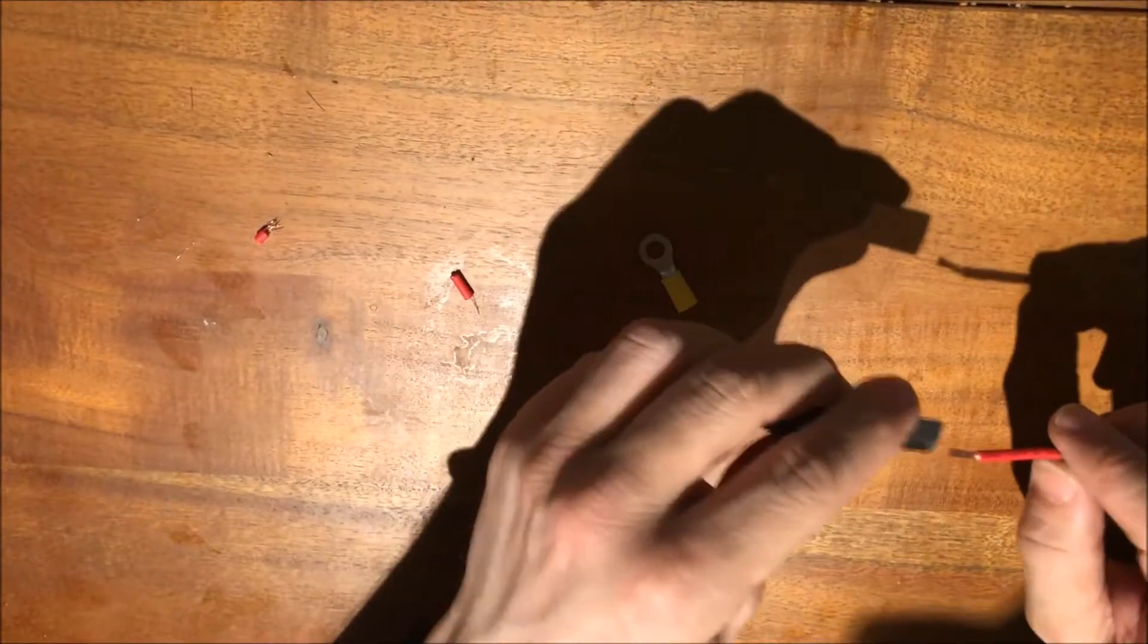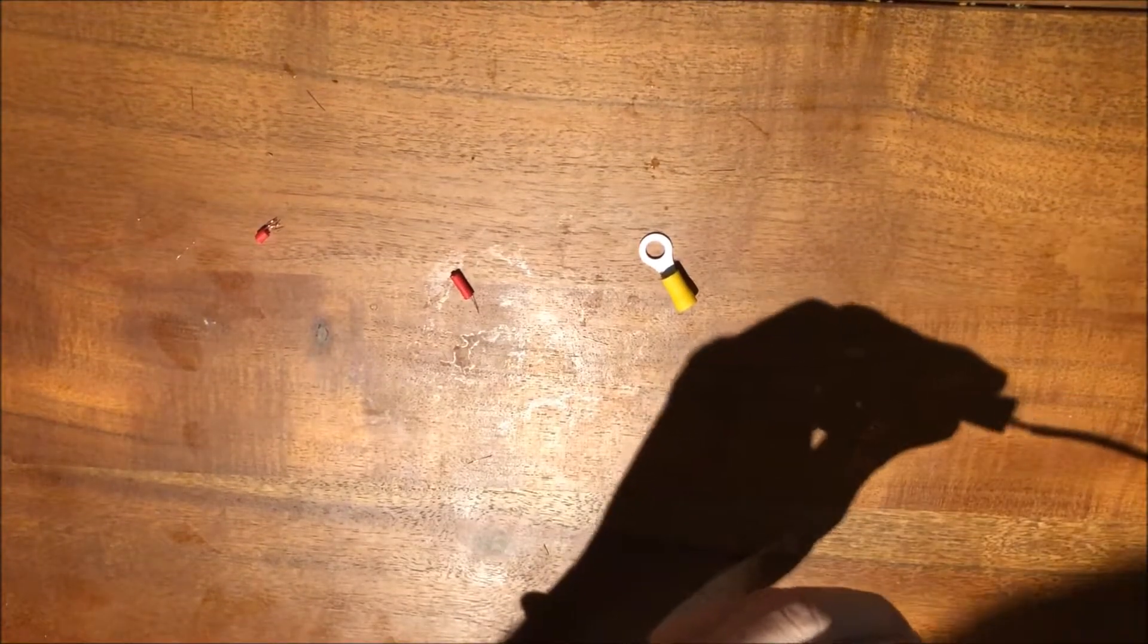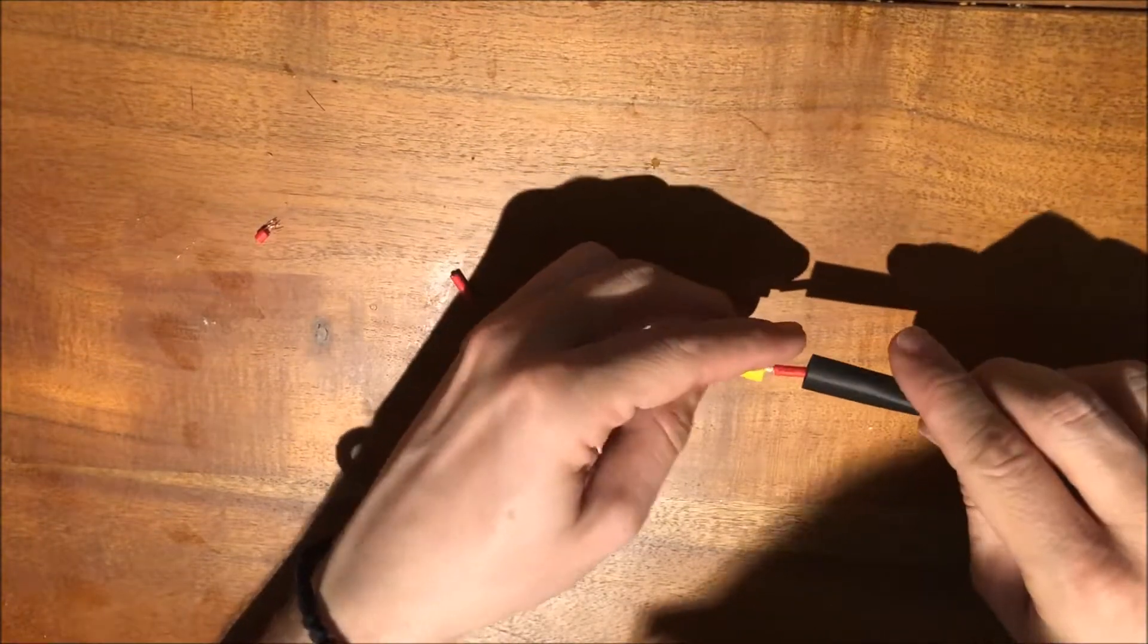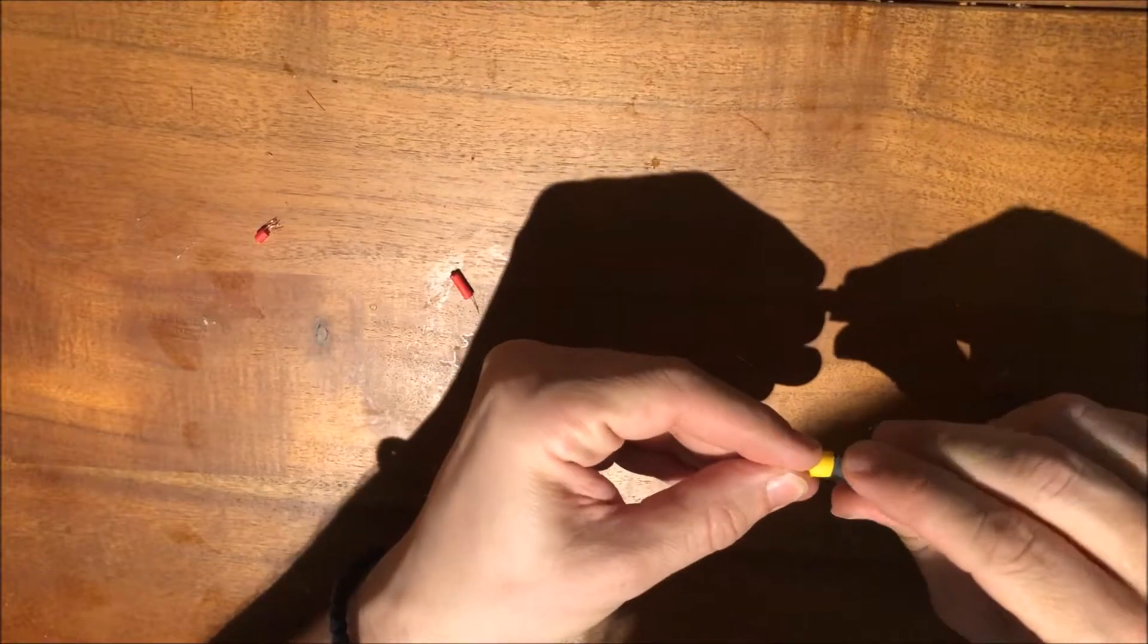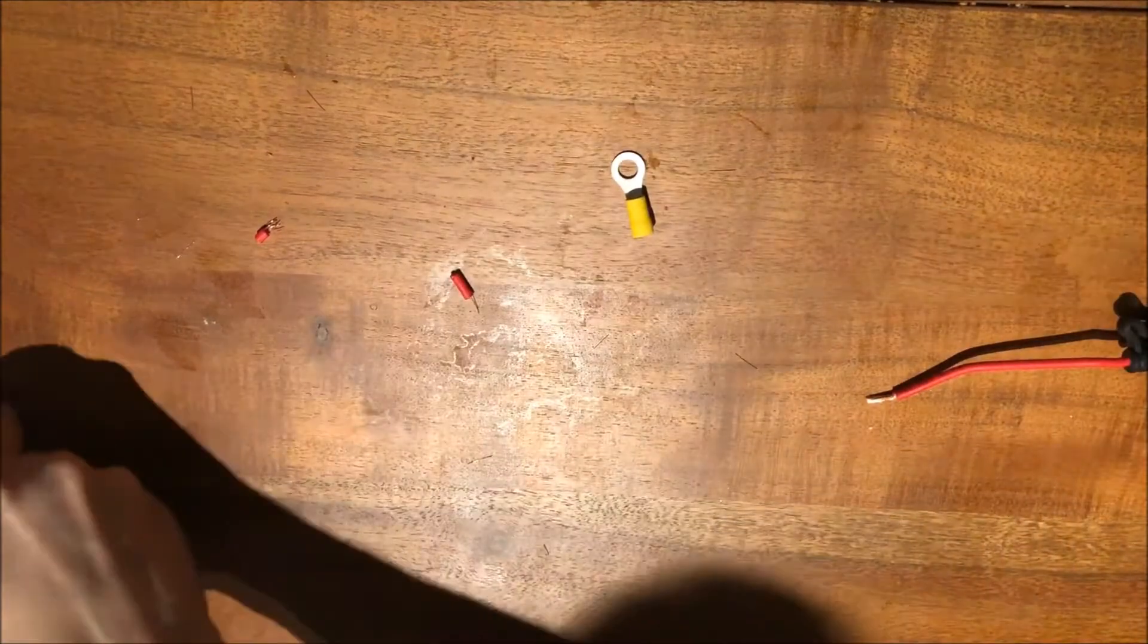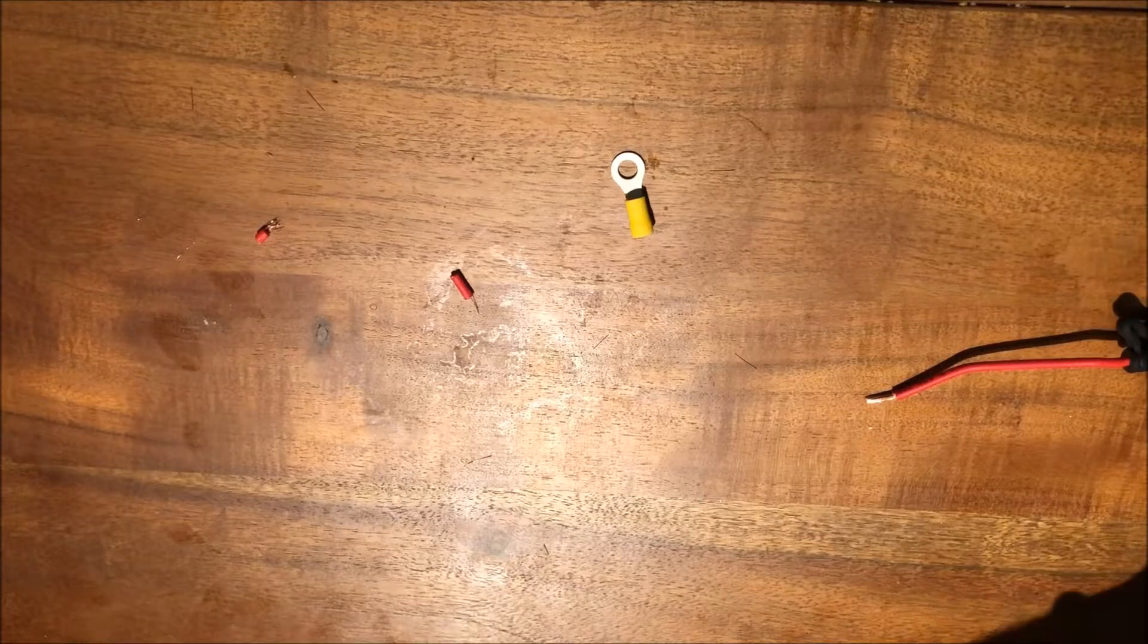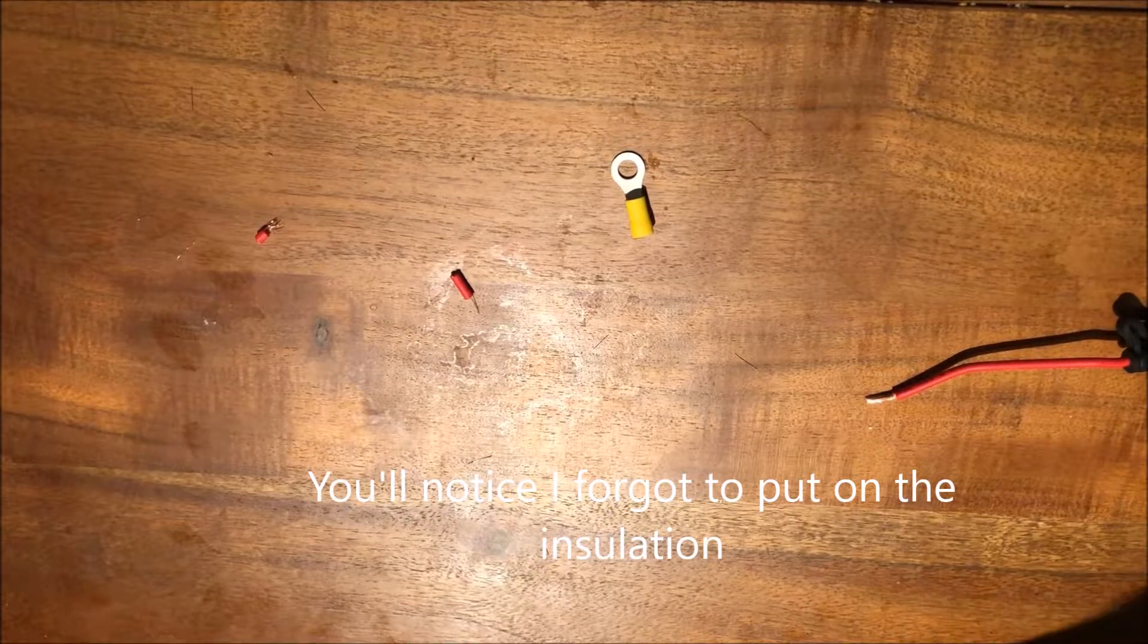I've got some thicker heat shrink tube - let me just make sure that's going to fit over this, which it does. So now I'll get back to doing what I need to do. The next step here is going to be to crimp this.